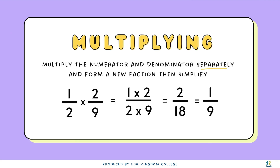Let's have a look at multiplying. Multiplying fractions requires us to multiply the numerator and the denominator separately and form a new fraction, then simplify. We have an example here: 1 over 2 times 2 over 9. All we have to do is multiply the numerators together — 1 times 2 — and the denominators together — 2 times 9 — to give us a new fraction of 2 over 18, which simplifies to 1 over 9.